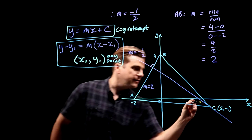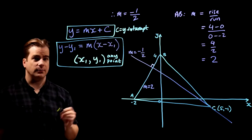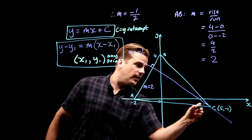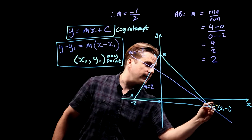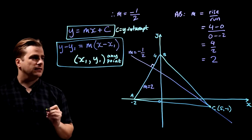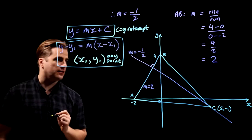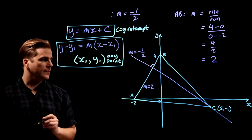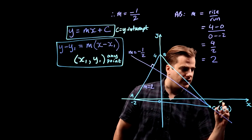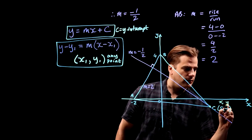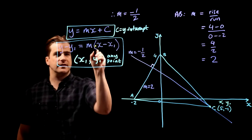And guess what? We've been given a point on the line. We're told that the line we want passes through that point there, 5, -1. So our x1, y1 is 5, -1. That's our x1, that's our y1. So we're going to use this equation.